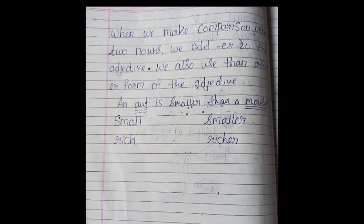But, and er is added when we make comparison between two and that is known as comparative degree. When comparison is made between many or between the whole thing of the same kind, it is known as superlative. Okay.